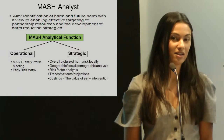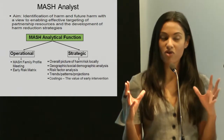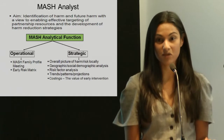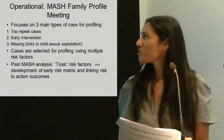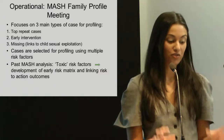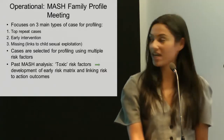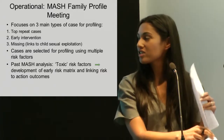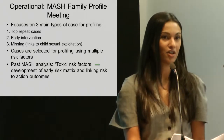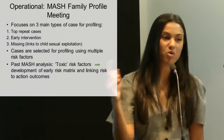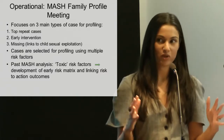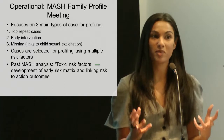So we can actually start to say: have we got the right services in the right places, or do we even have the right services to begin with? The MASH family profile meeting focuses mainly on three main types of cases. The first type is our top repeat cases — those ones that just keep on coming back through the MASH time and time again, those persistently problematic families.